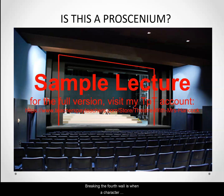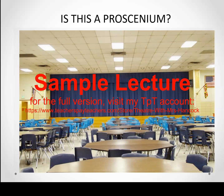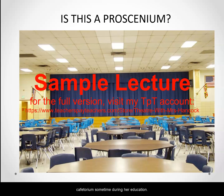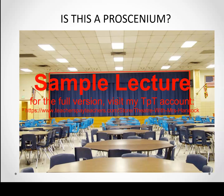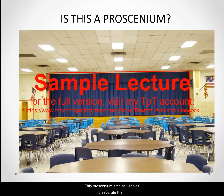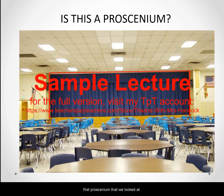Breaking the fourth wall is when a character acknowledges the presence of the audience. This might be familiar to you especially if you had a cafetorium sometime during your education. This is a multi-use space, but is one of its uses as a proscenium theater? Yes! Here we see outlined in red the very simple proscenium arch created by the cinder block walls. This proscenium arch still serves to separate the audience from the action and frame the play like a picture, even though it's very plain and very different from the first proscenium that we looked at.